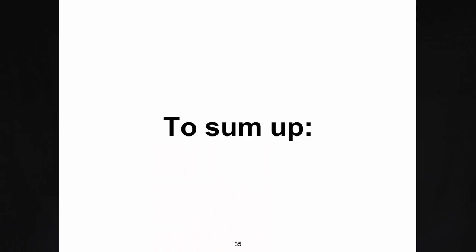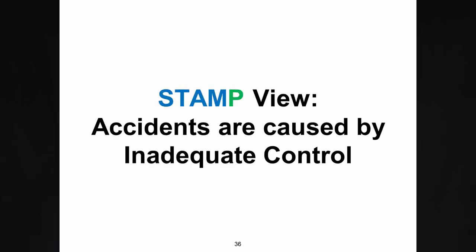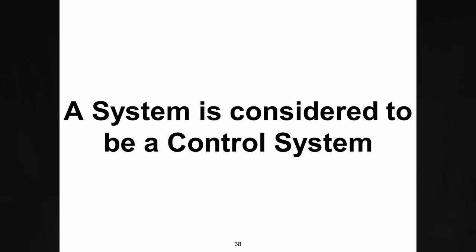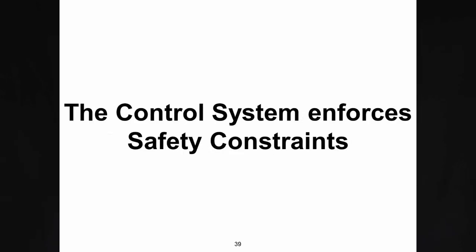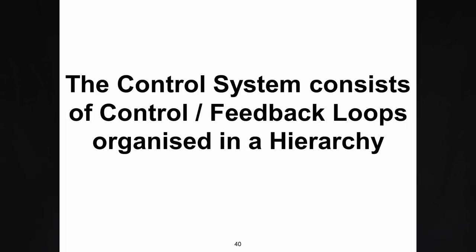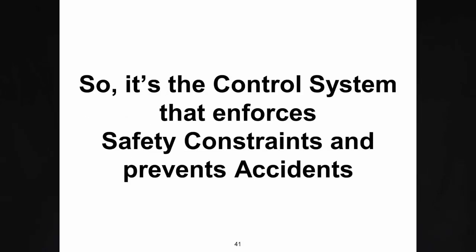To sum up: accidents are caused by inadequate control. A system is considered to be a control system, and that control system enforces safety constraints. It consists of control feedback loops organized in a hierarchy, and it is that control system that enforces safety constraints and prevents accidents.